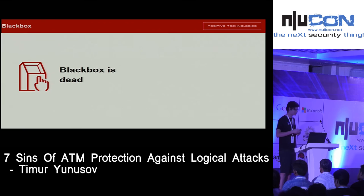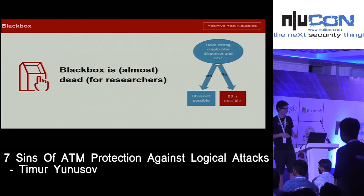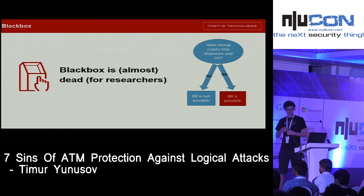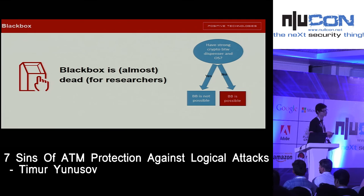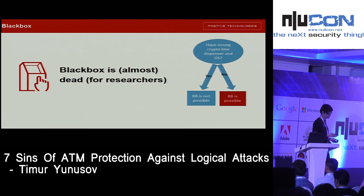With that definition, the next point is: black box is dead — almost. Black box is almost dead because we still have a lot of ATMs without proper encryption, with old firmware and no external security devices. And for security researchers, black box is dead because it's pretty simple: if the ATM has strong, invulnerable encryption between the operating system and the dispenser, black box is not possible. If it doesn't, it is. It's easy.